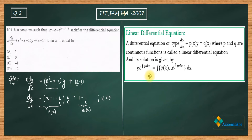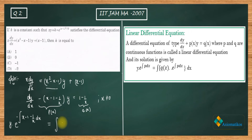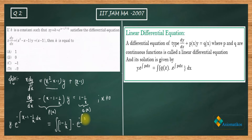According to the result for linear differential equations, we can write the solution directly: y · e^(∫P dx) equals the integral of Q(x) · e^(∫P dx) dx. Here P is minus (x − 1 − 1/x), and Q is (1 − 1/x). The term e^(∫P dx) is known as the integrating factor.